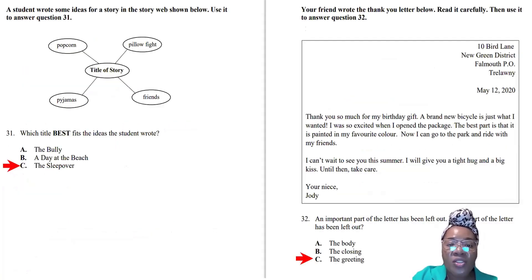Question thirty-one: Here we have a story web. Some teachers call it a graphic organizer, others a story map. In the middle you have 'title of the story,' then words around it: popcorn, pillow fight, friends, pajamas. Those words give you an idea what it's about. The answer is 'The Sleepover.' It can't be 'The Bully' or 'A Day at the Beach' because people don't wear pajamas to the beach.